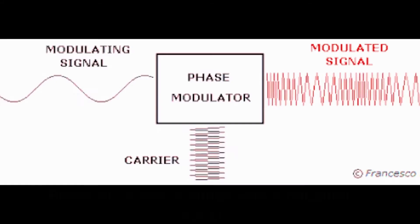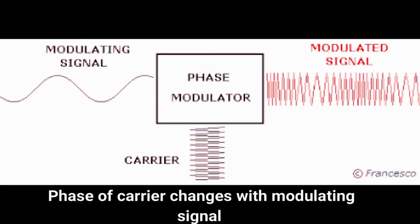Phase modulation. Phase of the carrier signal will be modified in this method and we will obtain phase modified signal in the output.